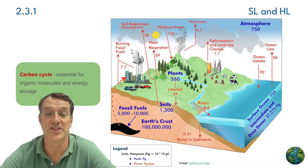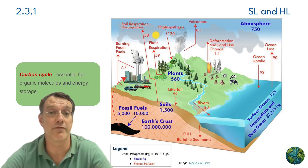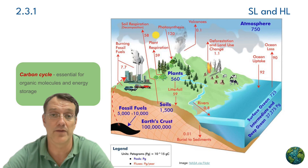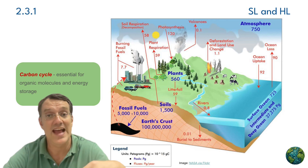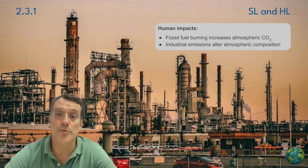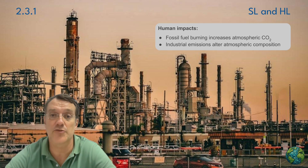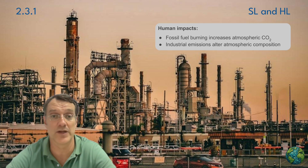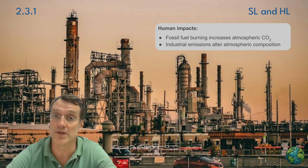Let's begin with the carbon cycle, which is essential for organic molecules and energy storage. This diagram shows the major carbon stores and flows on Earth. Notice how carbon moves between the atmosphere, the plants, the soils, oceans, and Earth's crust. Human activities significantly impact the carbon cycle — industrial emissions from facilities like this one increase atmospheric CO2 concentrations, altering the natural balance that has existed for millennia.